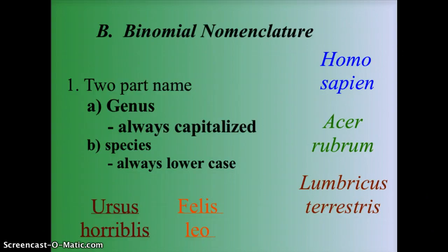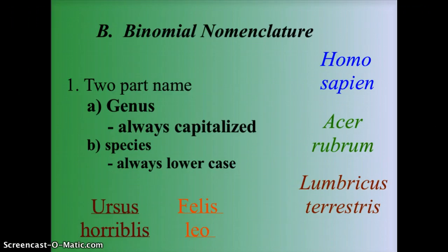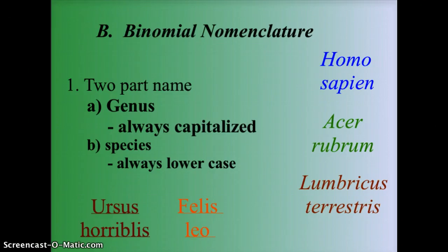This system is called binomial nomenclature — 'bi' meaning two, 'nomial' meaning terms, and 'nomenclature' meaning name, so it's a two-part name. Every organism is named by its genus, which is always capitalized, and its species, which is always written in lowercase. The genus and species name is always italicized, or underlined if italics aren't available.